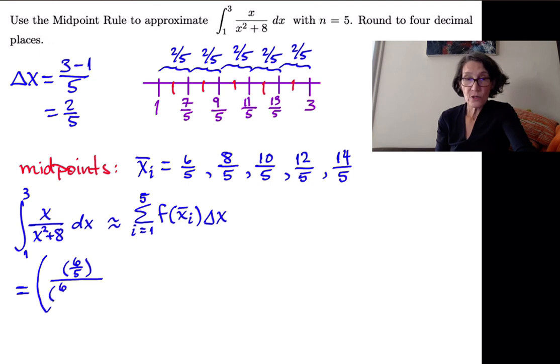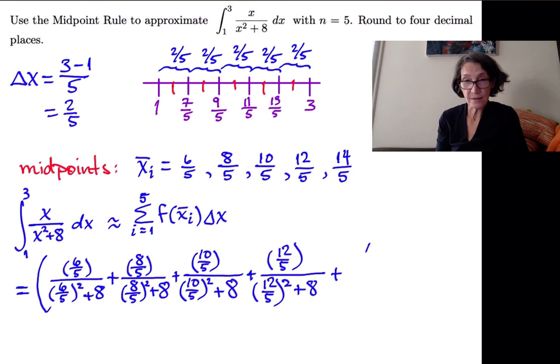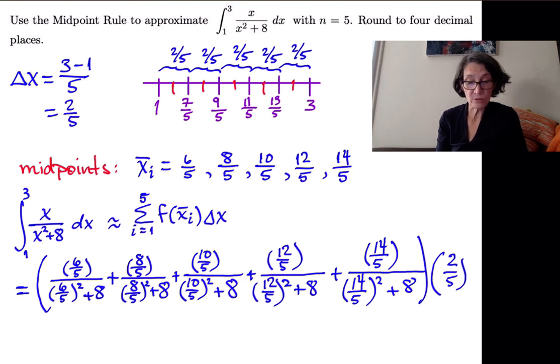Six-fifths over six-fifths squared plus eight, plus eight-fifths over eight-fifths squared plus eight, plus ten-fifths over ten-fifths squared plus eight, plus twelve-fifths over twelve-fifths squared plus eight. And the last term is fourteen-fifths over fourteen-fifths squared plus eight. And I'm multiplying that sum by delta x, which is two-fifths.